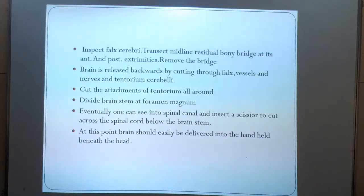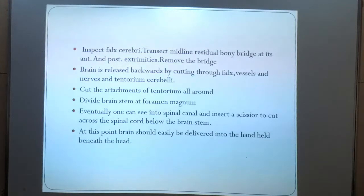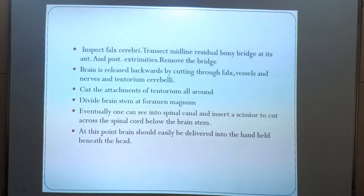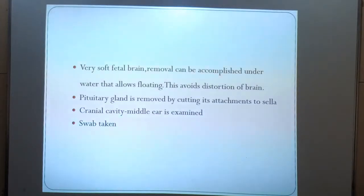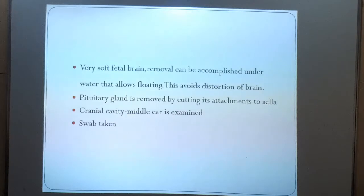The falx cerebri is inspected. The midline residual bony bridge is transected. The brain is released backwards by cutting through the falx, vessels, nerves, and tentorium cerebellae. The attachment of the tentorium is cut all around. The brain stem is divided at the foramen magnum, and a scissor is inserted into the spinal canal to cut across the spinal cord below the brain stem. At this point the brain should easily be delivered into the hand held beneath the head. The fetal brain is very soft, and removal can be accomplished under water to allow floating, which avoids distortion. The pituitary gland is removed by cutting its attachment to the sella. The cranial cavity and middle ear are examined and a swab is taken.